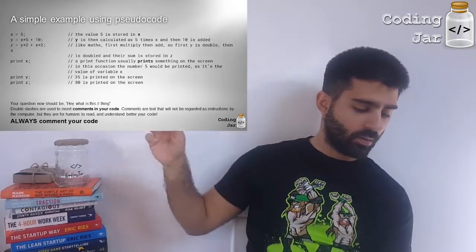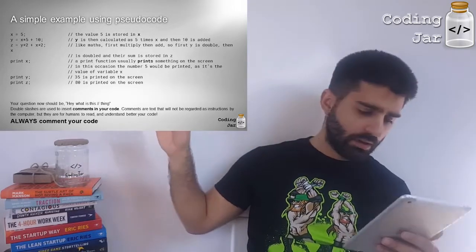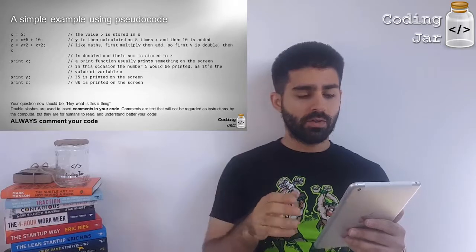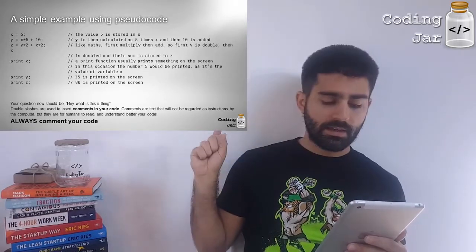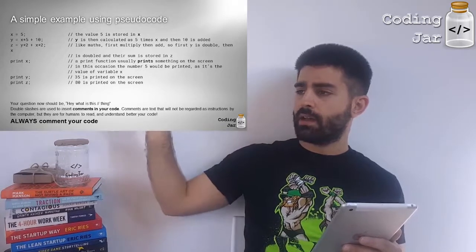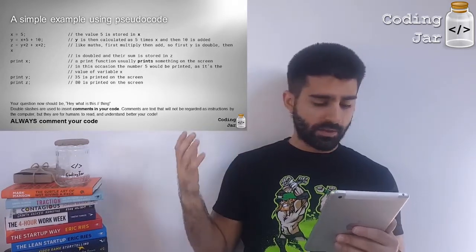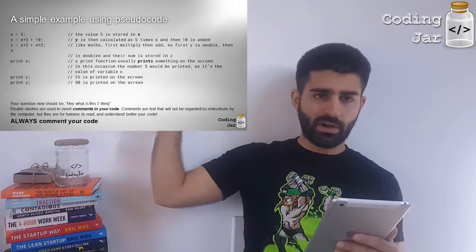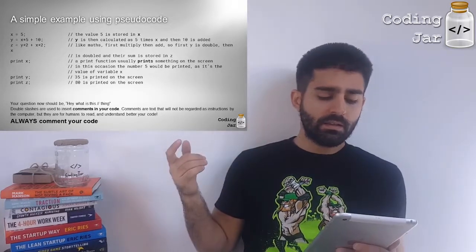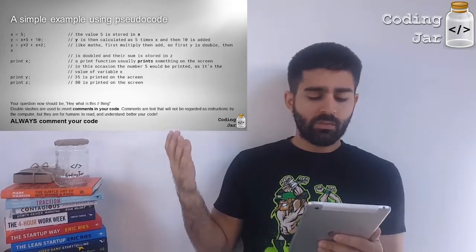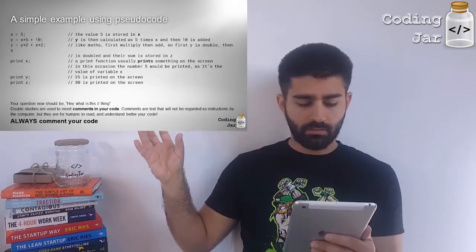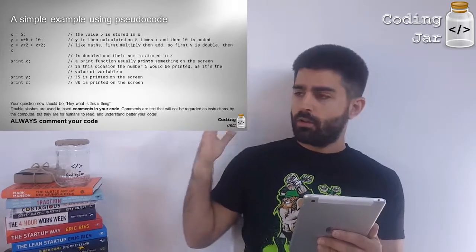Then we say y equals x times 5 plus 10. So, the first part is to calculate x times 5 plus 10 and then the outcome of that mathematical operation is gonna be stored as a value within y. The same way x works. And then z is the outcome of 2 times y and 2 times x summed together.